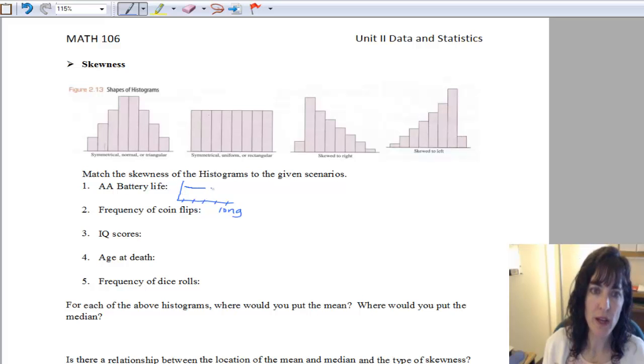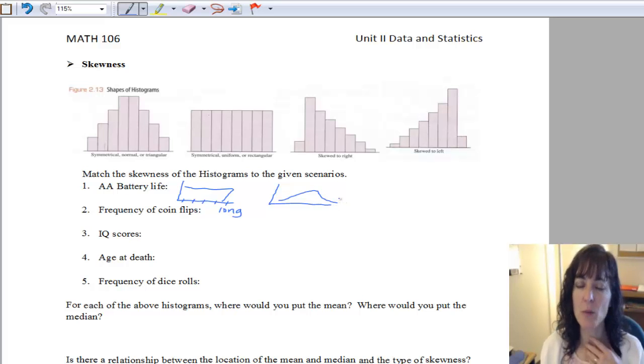Do we expect to have this sort of shape where some of them, an even amount of them last a short amount of time, an even amount last a middle amount, and an even amount of them last a long time so that it's kind of an even distribution? Or do we expect it to be more like this where it's a mound shaped where we have some that last not very long and then a bunch that last about this length of time and then some that last longer?